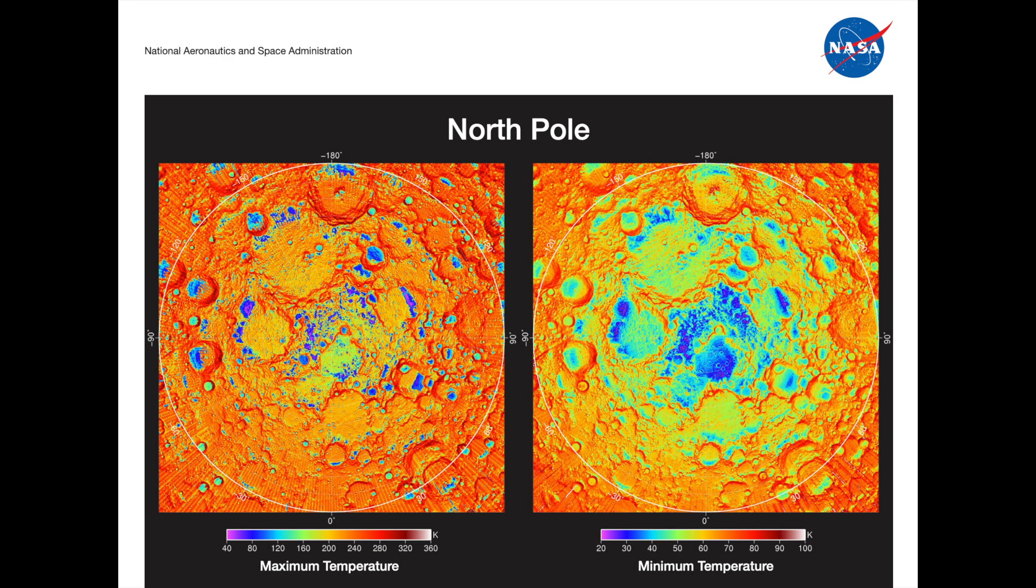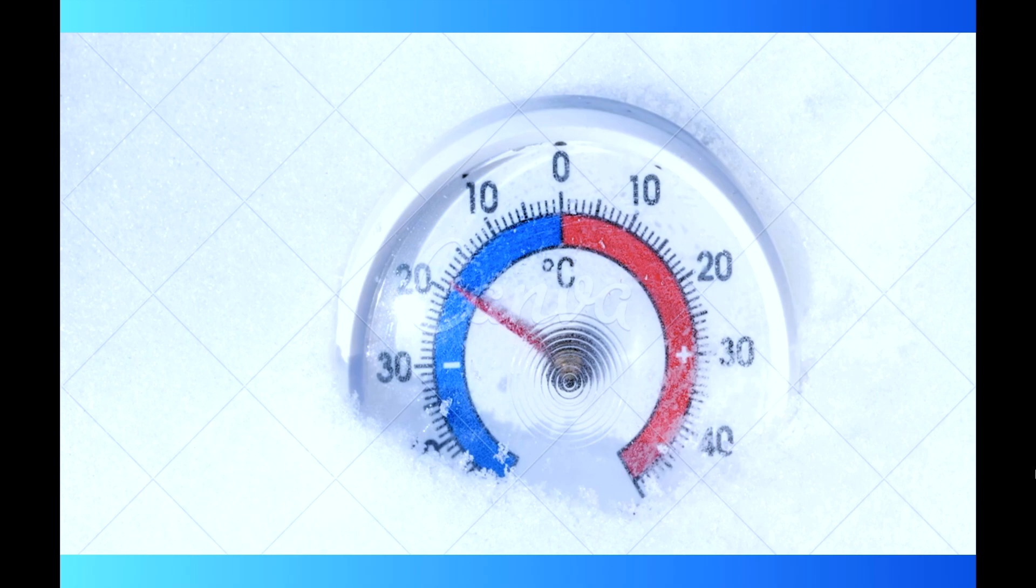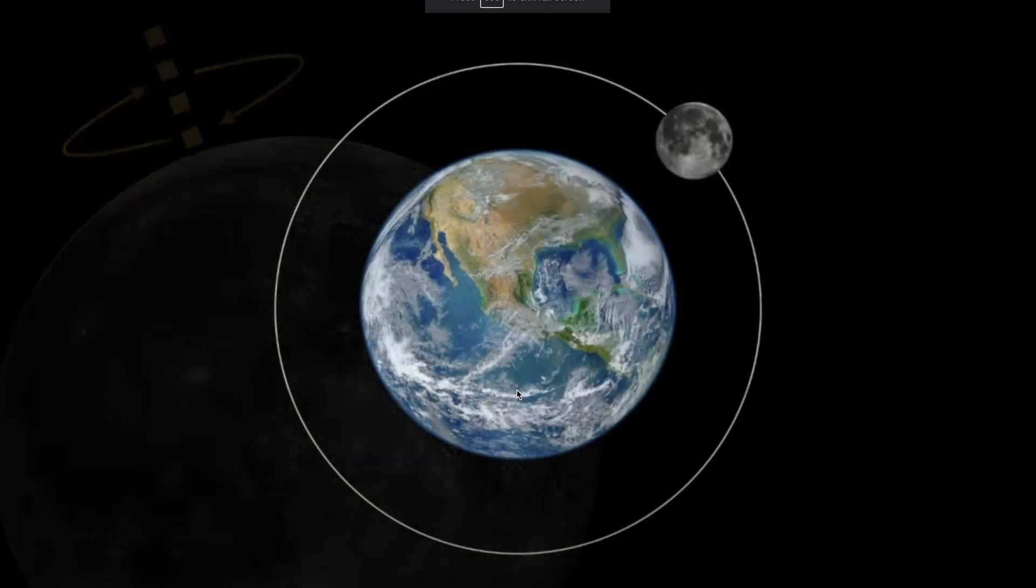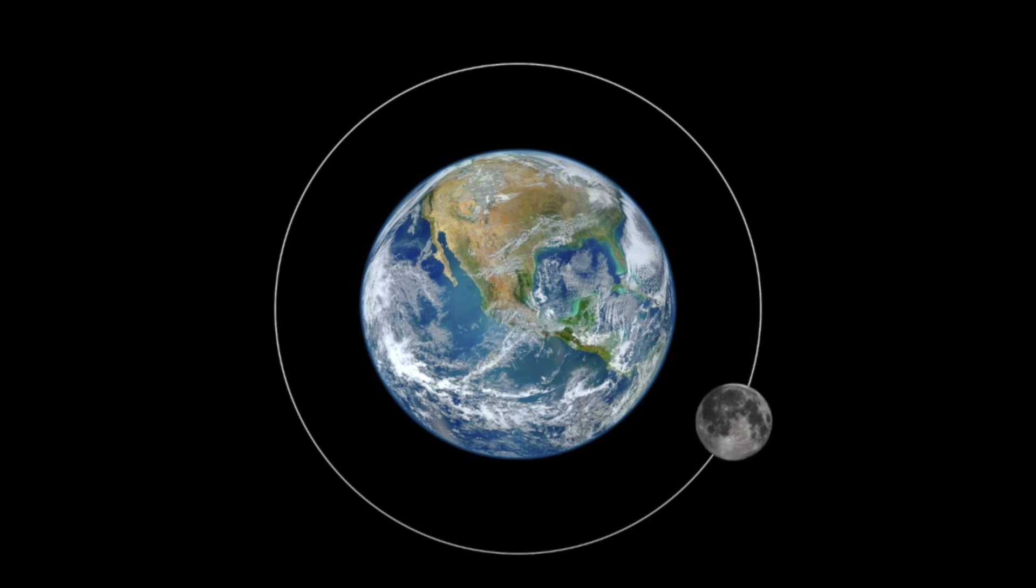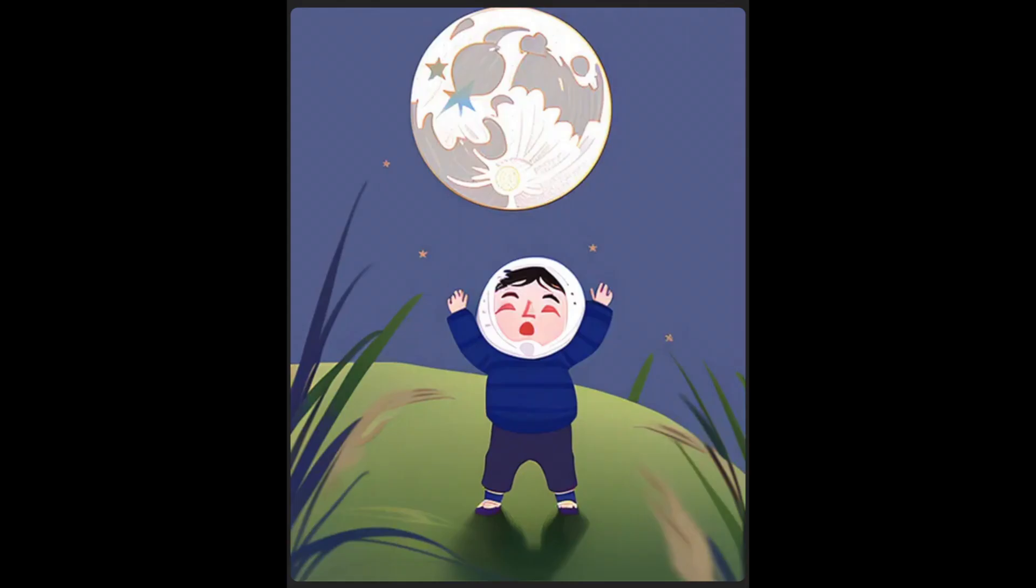Daytime temperatures near the lunar equator reach a boiling 250 degrees Fahrenheit, while nighttime temperatures get to a chilly minus 208 degrees Fahrenheit. The moon's poles are even colder. And we think that the moon is our constant companion, our friendly neighbor. It's not. It's bloody miles away. The moon is not your friend, okay?